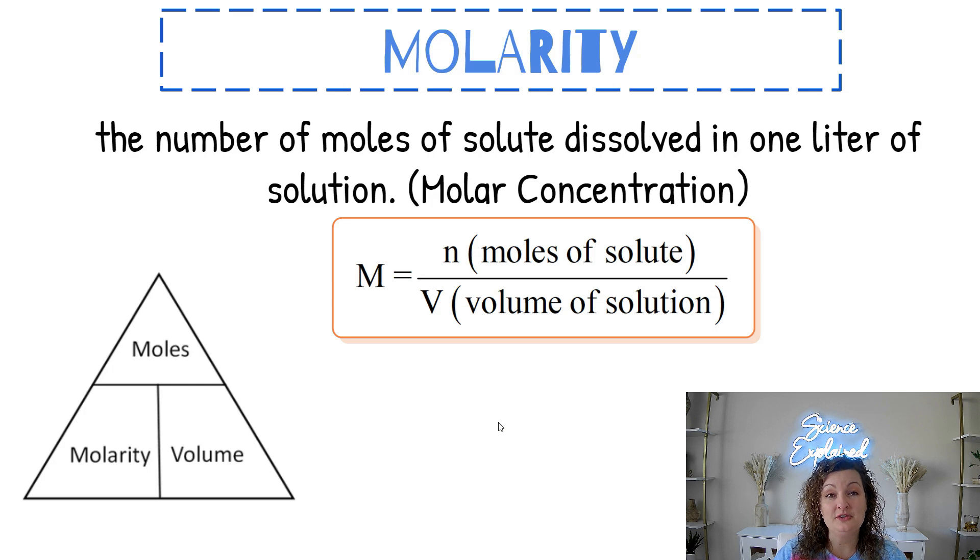So we can also do calculations with molarity. So the number of moles of solute dissolved in one liter of solution is the molar concentration, and this is your formula for it. The capital M stands for molarity. A lowercase n is the moles of your solute. The V stands for volume of solution.